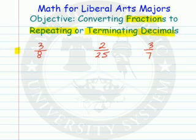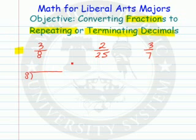All these are rational numbers. Remember, a rational number is one which can have an integer for a numerator or a denominator. To convert these fractions to decimals, we do a division problem. Some are going to repeat, and some are going to terminate.